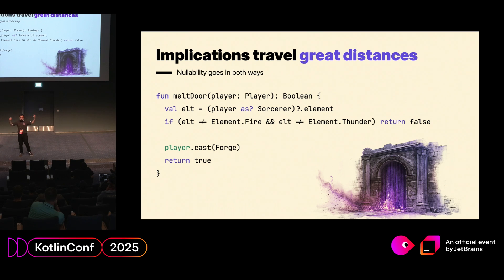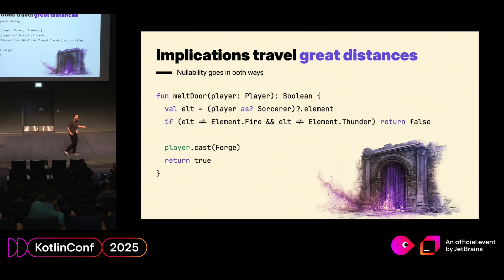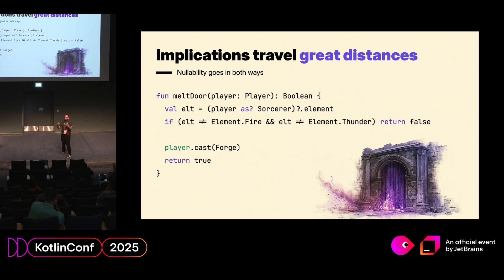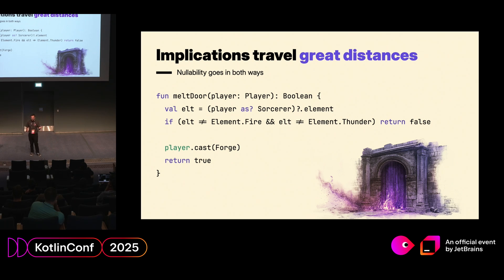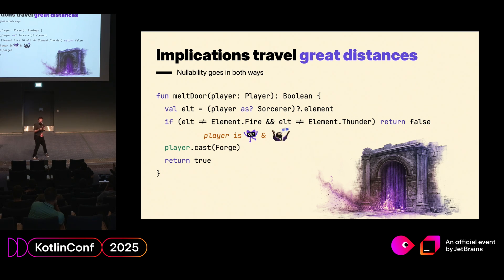We can do this for even more complicated things. Imagine a bit of a complicated way to melt a door — we say if we have a sorcerer which has the fire or electric element, melt it, otherwise do something else. We have a lot of early returns to go out if we are not in this case. The thing is, it knows that at this point we have a sorcerer, but it's not so clear — we have a bunch of different things. Let's go step by step what the compiler can do.